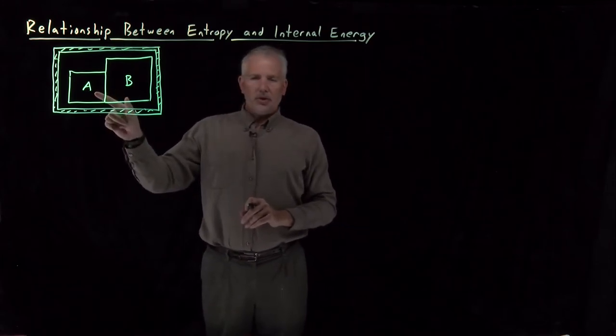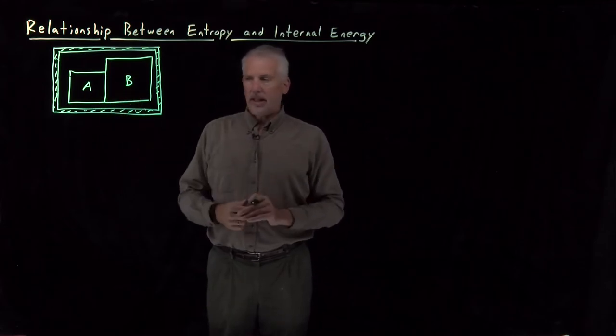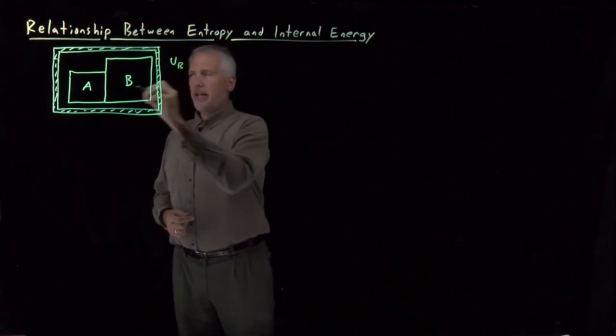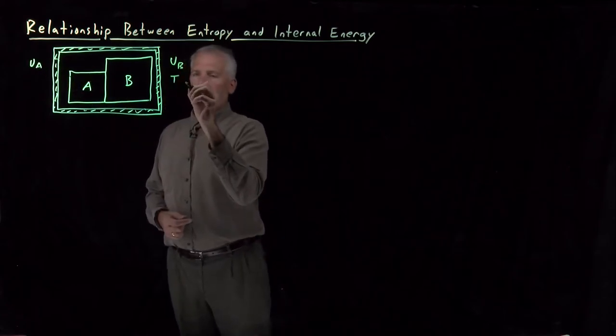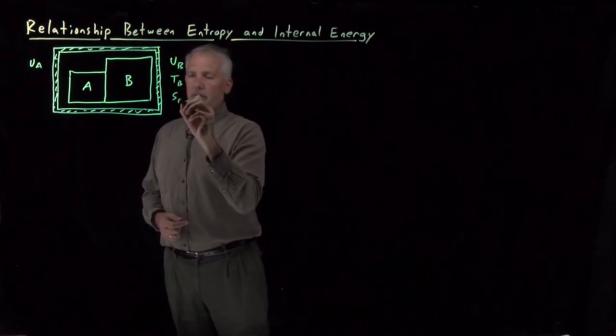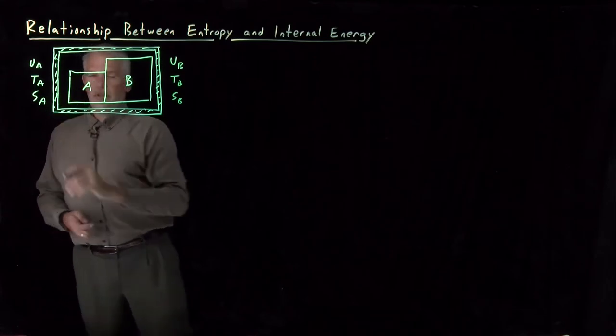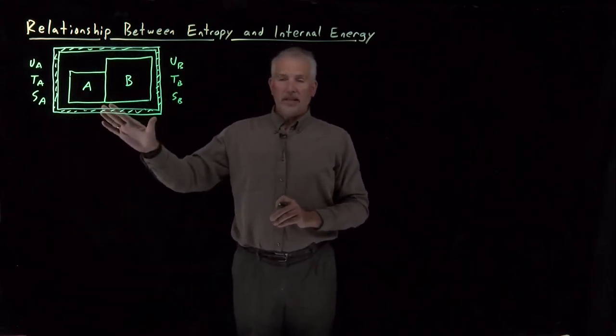I'm going to allow these two systems A and B to be different materials, different sizes, different masses, different everything. They can have different temperatures. They can have different energies. So the energy of A and the energy of B can be different from one another, as can their temperatures, as can their entropies. Each one of these properties that we list might be different from one than the other. And our goal is to understand what is going to spontaneously happen.